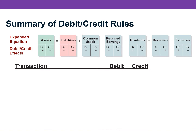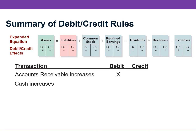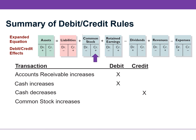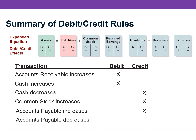Let's practice translating increases and decreases into debits and credits. If accounts receivable increases, which is an asset, you will DEBIT this account. If cash, which is also an asset, increases, you will DEBIT this account. If cash decreases, you will CREDIT this account. If common stock increases, you will CREDIT this account. If accounts payable decreases, you will DEBIT this account.